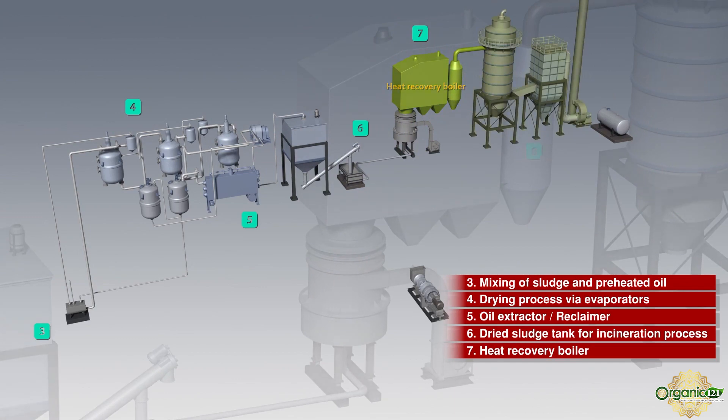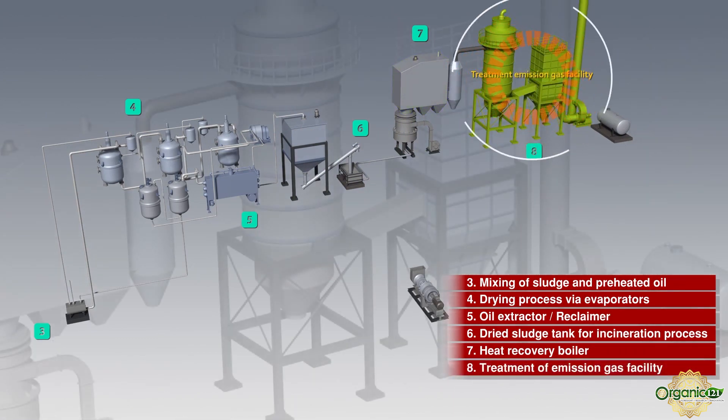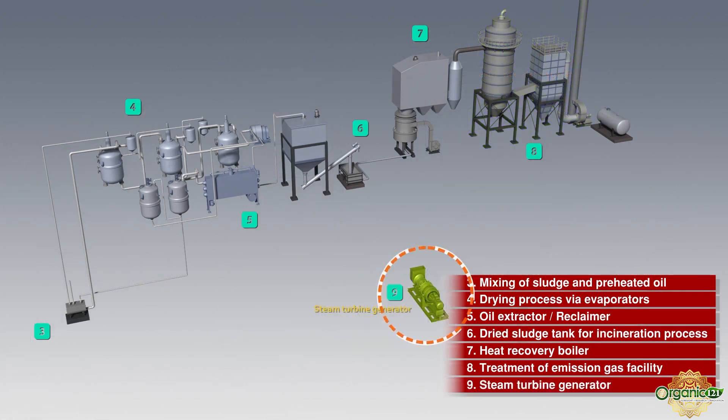Heat recovery boiler to recover energy and produce steam used for sludge drying treatment and the steam turbine generator that can generate 1.5 megawatts of electricity for entire plant operation.